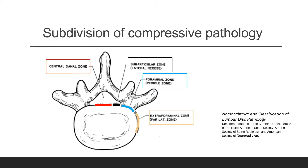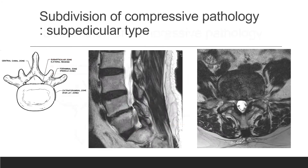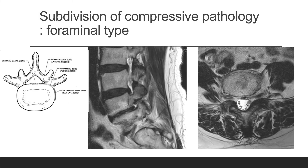Subarticular and foraminal pathology occupy most of the unilateral radicular pain. The subarticular area is defined as a space between the facet superior articular process and the posterior vertebral margin. The paramedian sector scan shows narrowing of subarticular space impeding the nerve root. On MR T2-weighted image, it shows focal protrusion of paracentral disc and narrowing of subarticular space. The foraminal area is defined as a space between the pedicle and posterolateral vertebral margin. The lateral sagittal scan shows dorsal root ganglion swelling and narrowing of foraminal space. An MR T2-weighted image shows hypertrophy of the facet joint and swelling of the dorsal root ganglion.